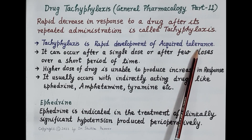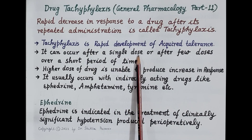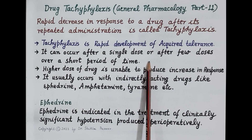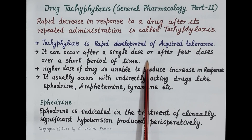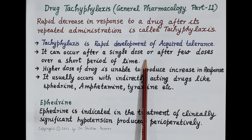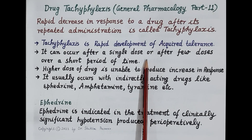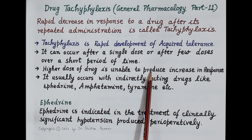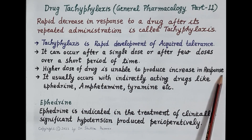Tachyphylaxis can occur suddenly after a single dose or after a few doses of the drug administered over a very short period of time. When a drug is taken repeatedly, suddenly the response to the drug reduces. Another very important point: unlike tolerance, in tachyphylaxis this reduced response does not increase even after increasing the dose. A higher dose of a drug is unable to produce an increase in the response.